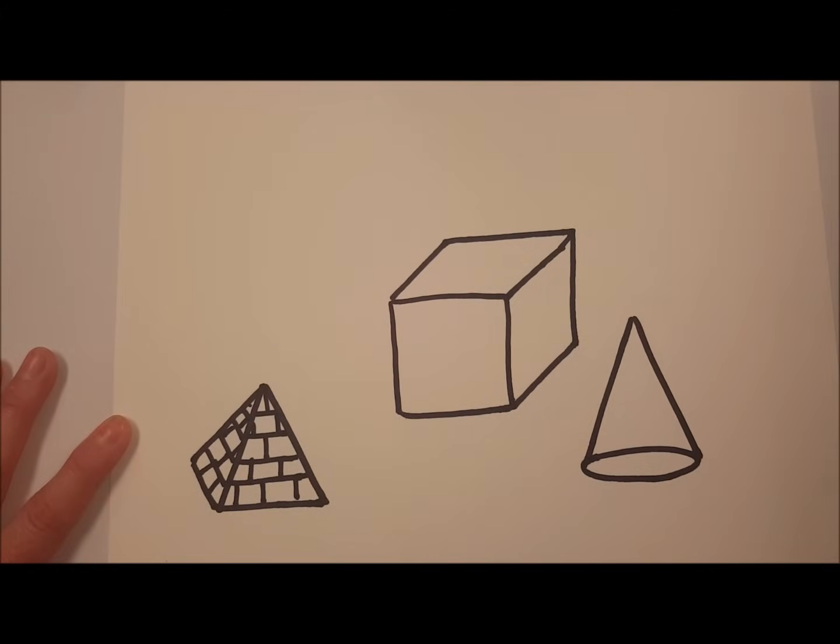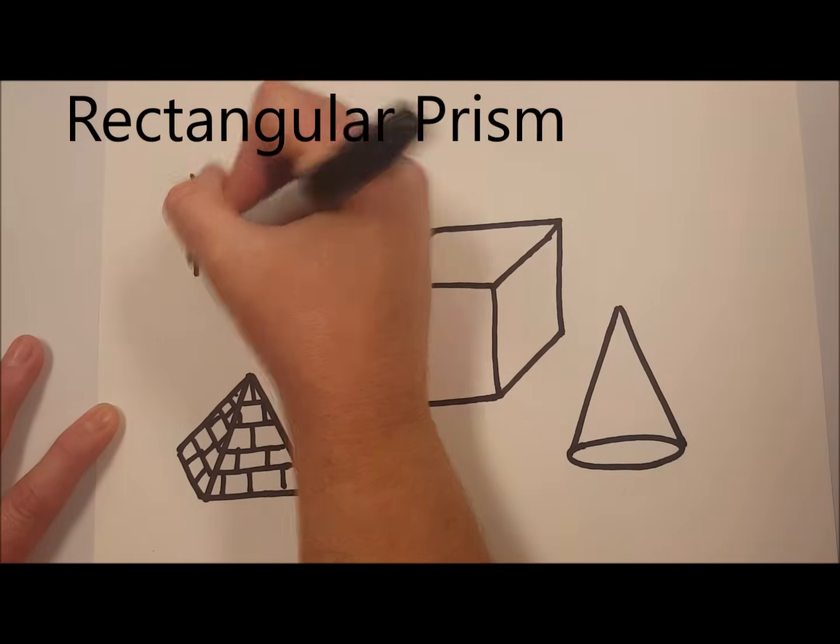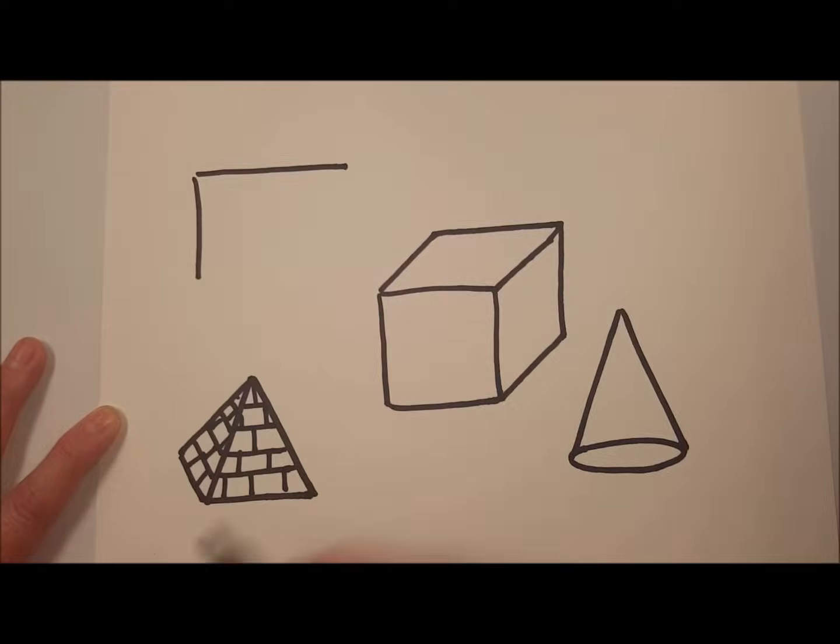Next, let's do a rectangular prism. A rectangular prism is a three-dimensional rectangle, so we'll start off with a rectangle.